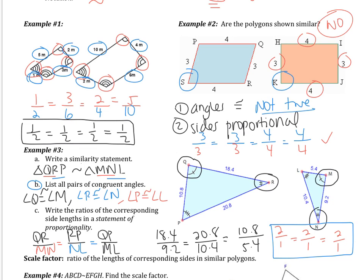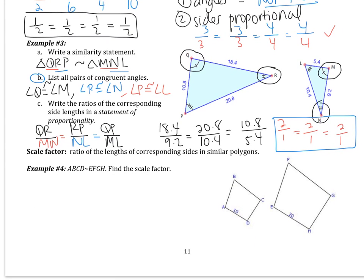This is like what we talked about last section with scale drawings and maps. Maps are a smaller version of real life — you take the real earth and shrink it down to a map. That represents similar figures. The scale factor is the ratio of the corresponding sides. In number 3, 2 over 1 would be the scale factor. Each pair of sides is going to have the same scale factor.